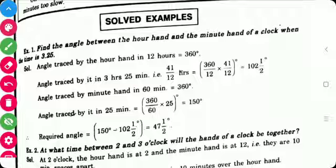So, angle traced in 3 hours and 25 minutes means 41 by 12 hours is 360 into 41 by 12 divided by 12. So, this is the equation. So, it is 102 and 1 half degree.